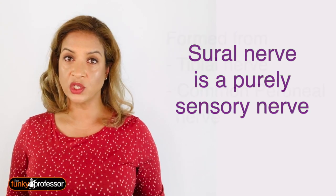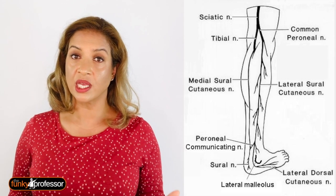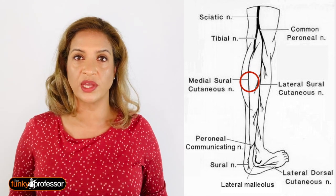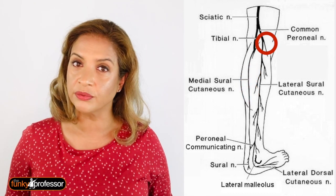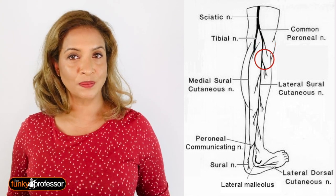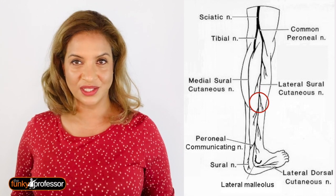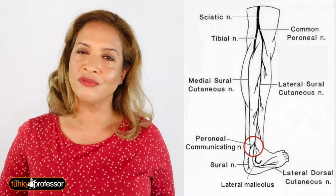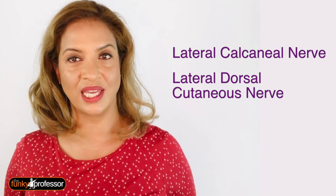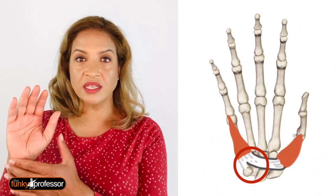Question two was about the sural nerve, which is a purely sensory nerve formed by a combination of two nerves. One branch comes from the tibial nerve, which arises in the popliteal fossa and passes over the two heads of the gastrocnemius muscle; the other branches from the common peroneal nerve. Both are constituents of the sciatic nerve. The sural nerve descends on the posterolateral aspect of the leg, travels behind the lateral malleolus of the distal fibula, passes deep to the fibularis or peroneal tendon sheath, and terminates into the lateral calcaneal branches and the lateral dorsal cutaneous nerve. It supplies the skin over the posterolateral aspect of the distal third of the leg and the lateral aspect of the foot, heel, and ankle.